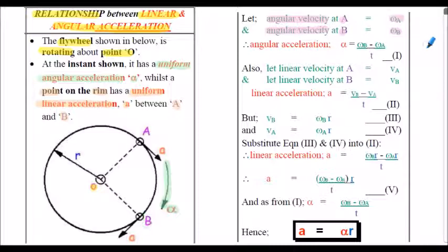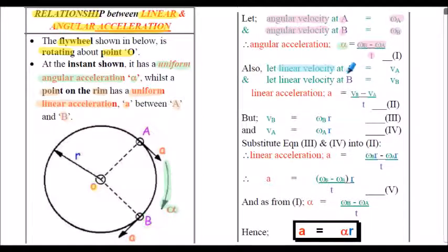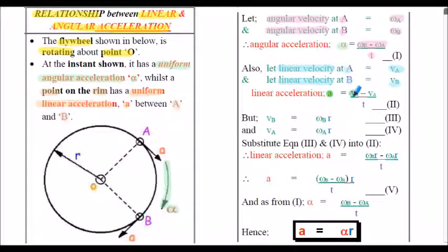We know from our previous work that the angular acceleration alpha equals ωB minus ωA divided by the time taken — call that equation 1. Similarly, the linear acceleration a equals VB minus VA divided by T — call that equation 2.